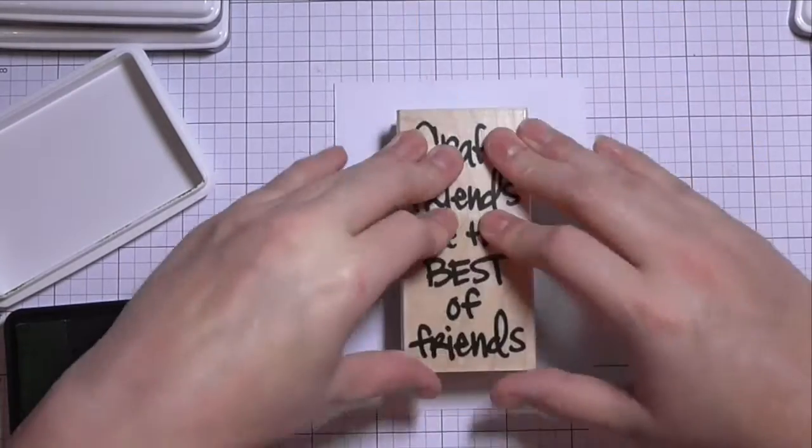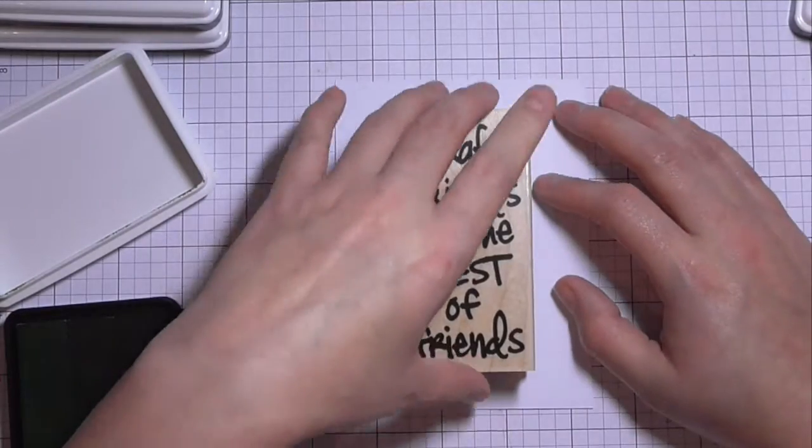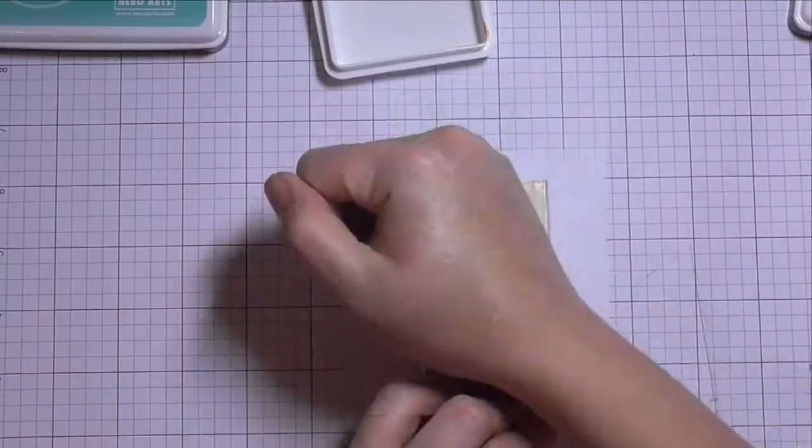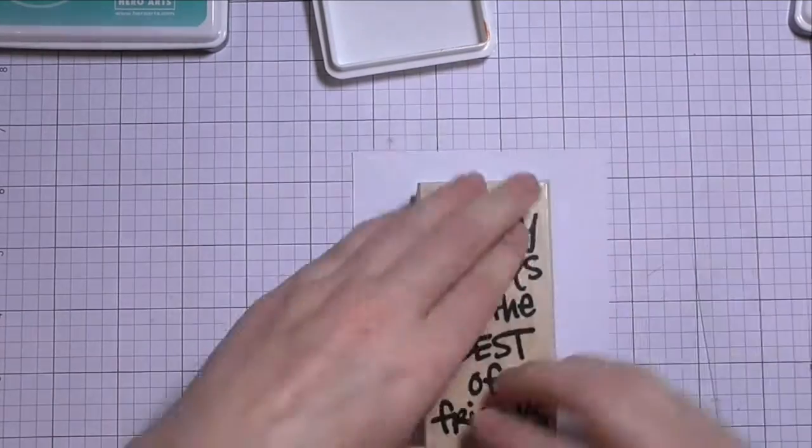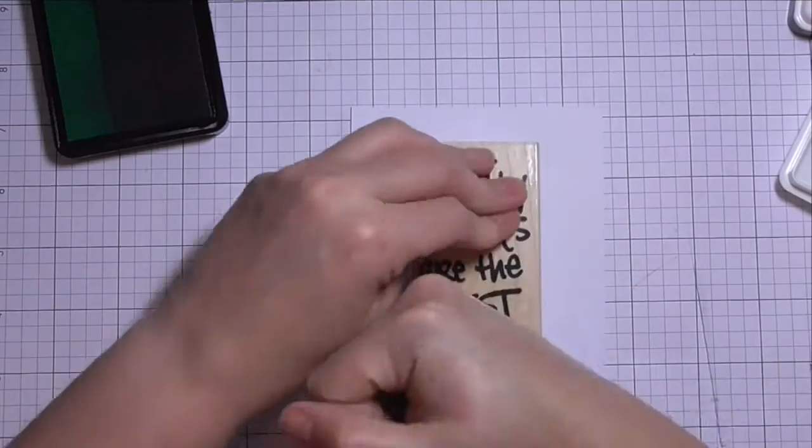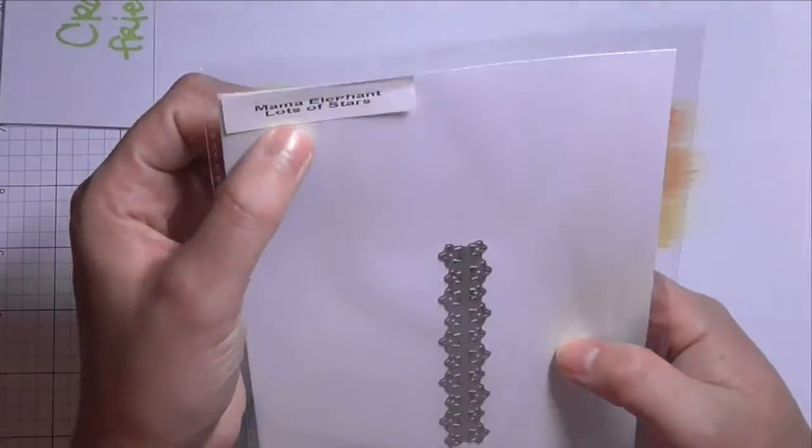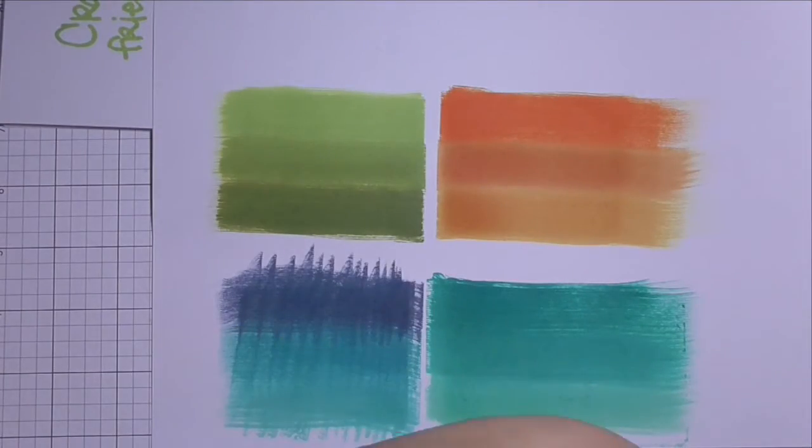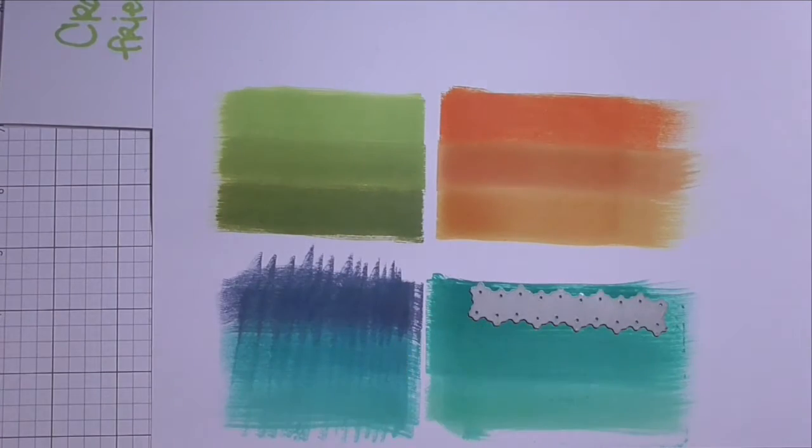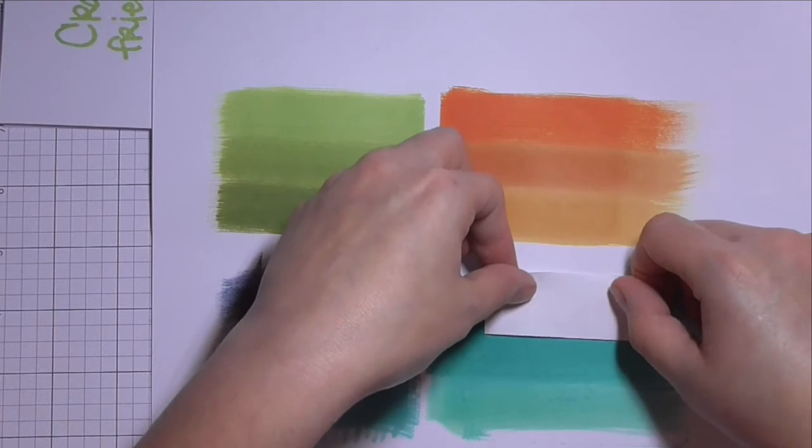And the second reason is because I'm going to die cut some stars later on out of each of those colors. Because I want some teeny tiny stars that perfectly match each of the ink colors in the Ombre ink pads. So if you don't have Ombre ink pads you could get the same effect just using some normal ink pads that you have. And just tapping those across certain parts of each of the sentiment.